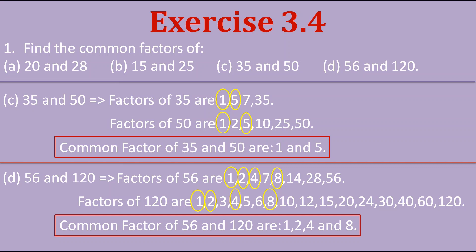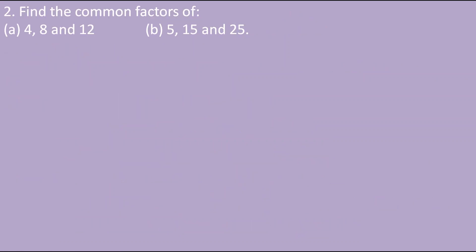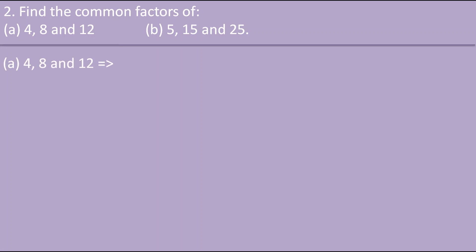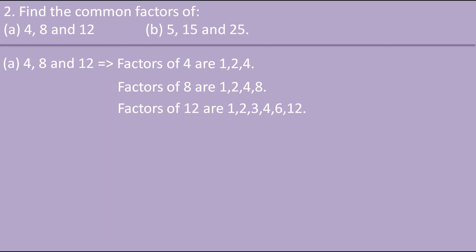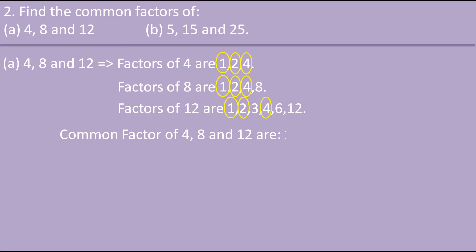The next question also asks to find common factors, but here three numbers are given. For 4, 8 and 12: the factors of 4 are 1, 2, 4; the factors of 8 are 1, 2, 4, 8; and the factors of 12 are 1, 2, 3, 4, 6, 12. The common factors are 1, 2 and 4. Therefore the common factors of 4, 8 and 12 are 1, 2 and 4.